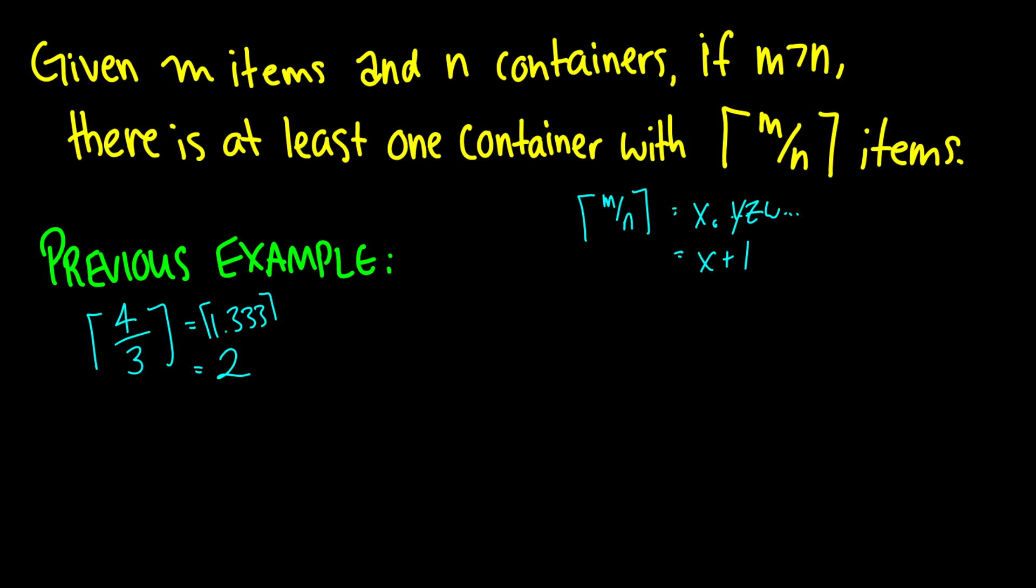So previously we saw we had 4 items in 3 containers. This is equal to 1.333 and so forth. But then the ceiling function rounds it up to 2. So there's at least one container with 2 pigeons in it. What if we had 10 items in 4 containers? Well, that means there's at least one container with 3 items in it. Of course there could be more. We can distribute it so all 10 items are in 1 container. But what we're saying is that we'll never get a distribution that has less than 3 items in any container.